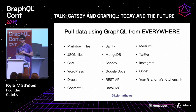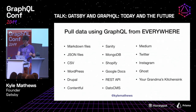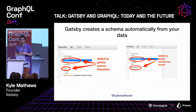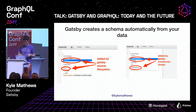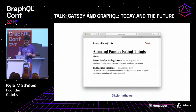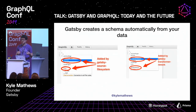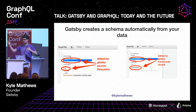Through our plugins, you can pull data from around 300 different source plugins — from data on your hard drive to all sorts of different APIs online like WordPress, Drupal, Contentful, Sanity, databases, Shopify, and the list goes on. What's cool is you don't have to create the GraphQL schema for your data yourself. Gatsby works with source plugins to automatically create schemas. For instance, Gatsby Source File System creates file nodes for each file, and any markdown file gets automatically turned into a markdown remark node which you can query.